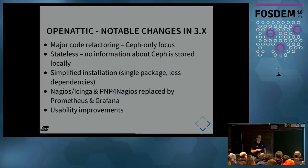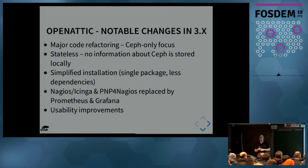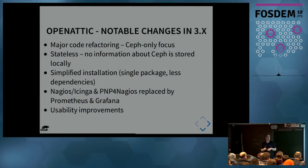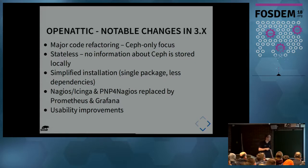Notable changes in 3.x — that was a big step forward. We refactored the whole code base. With 2.x it was still possible to also manage local storage — Openattic was originally built to be a local storage UI, to set up LVM, NFS on top, iSCSI, all that kind of things. We removed all of this code within the 3.x release and refactored so it now supports Ceph only. There's no traditional storage support anymore.